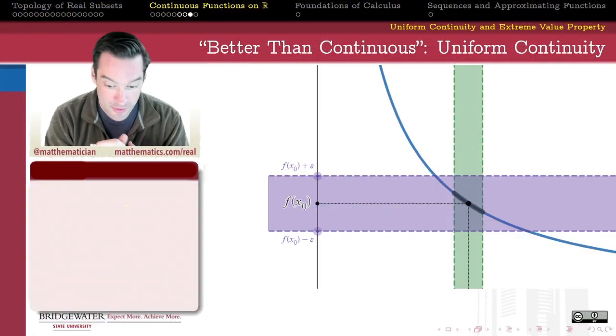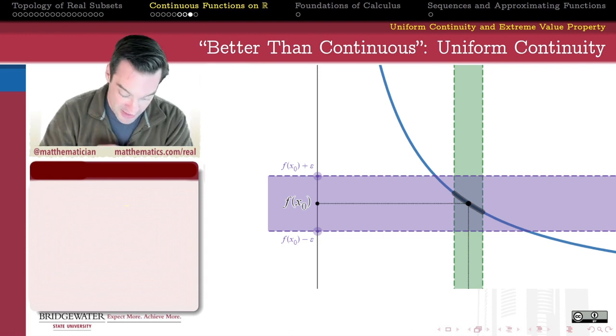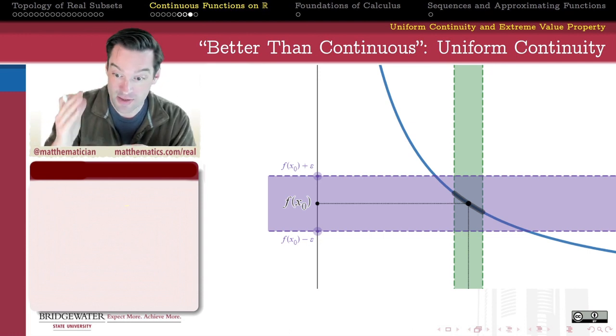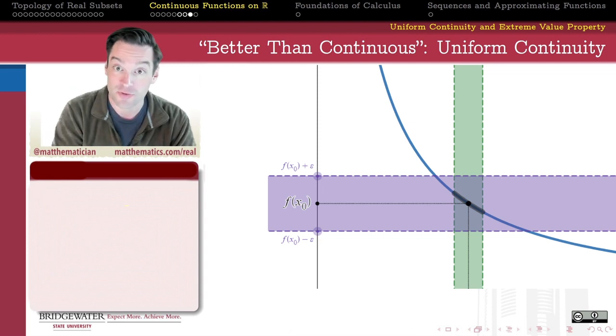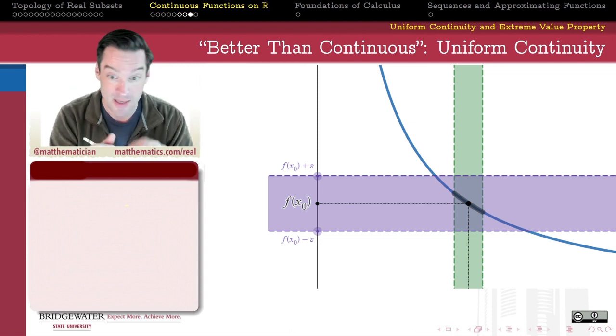So let's start out with a graph of a function. Let's have it be the continuous function f of x equals 1 over x on the domain which is the interval from 0 to 1 without including the endpoints.